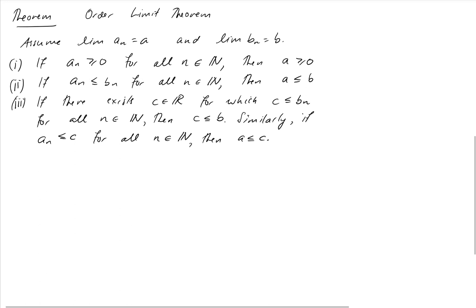So here it is, the so-called order limit theorem. Again, we've got two convergent sequences, a_n and b_n, and we're saying three different things, all of which are relatively similar.